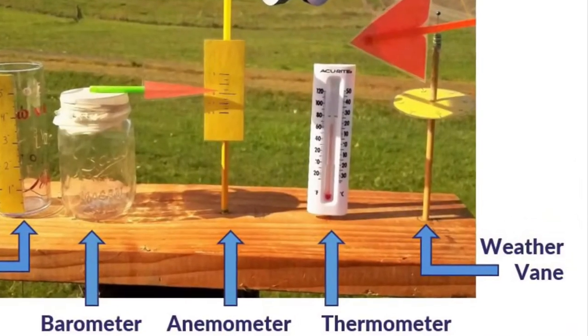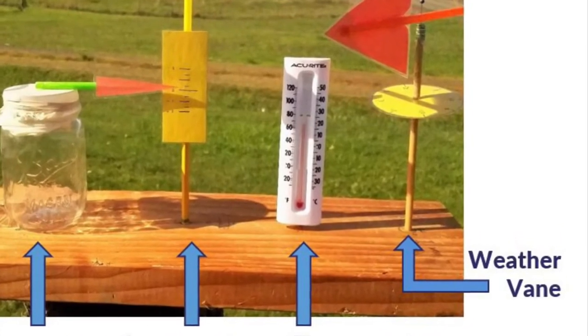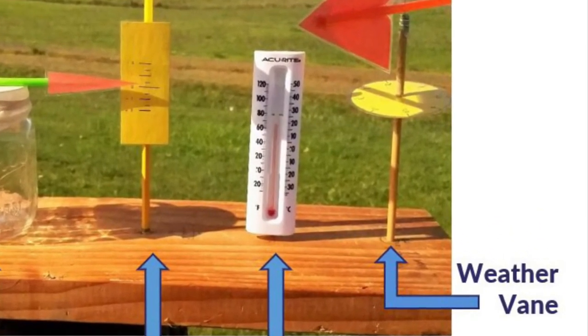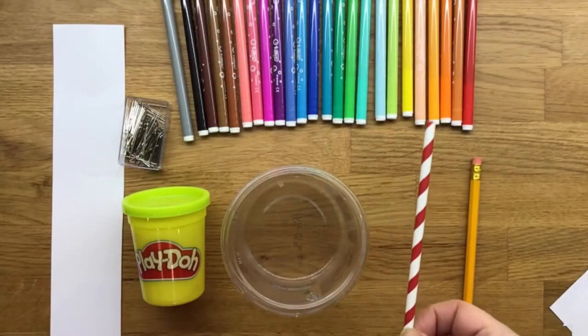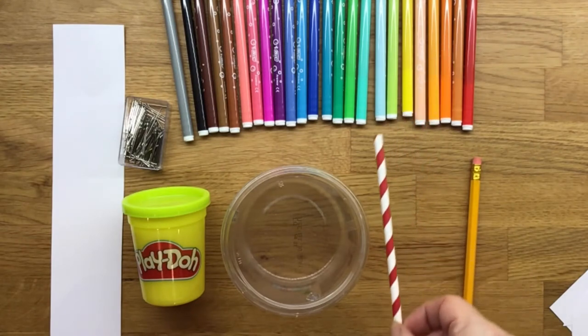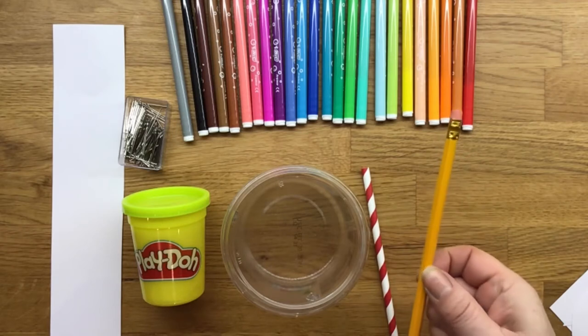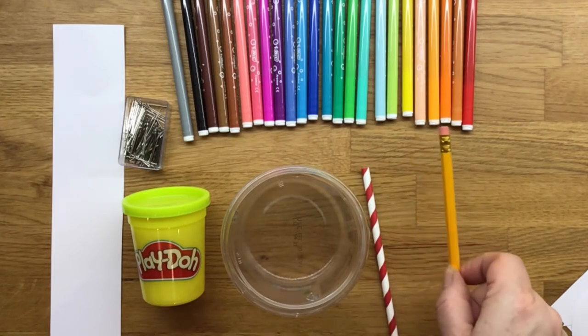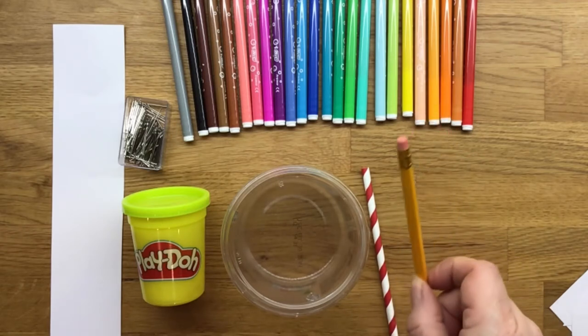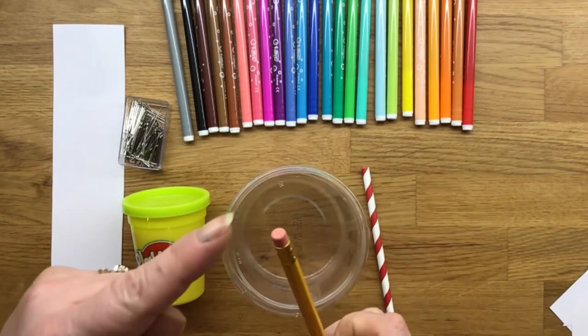Lastly we're going to make a weather vane that tells us the direction of the wind. To make the weather vane you're going to need to gather some equipment: a straw, a pencil with a rubber on top, a plastic pot with a lid, some play-doh, a pin, some paper and some coloured pencils.